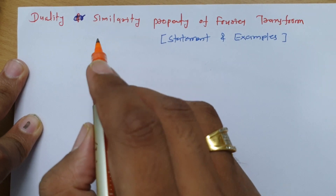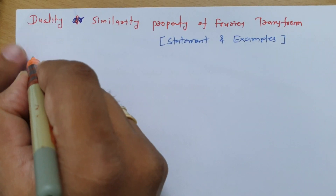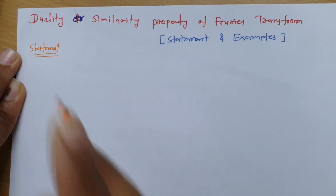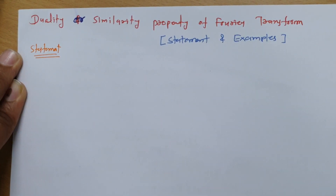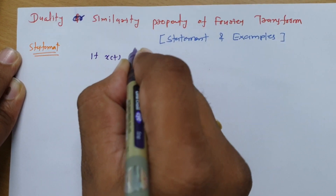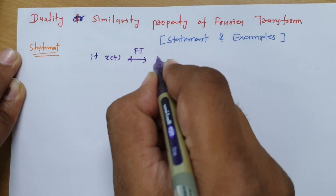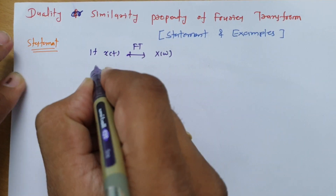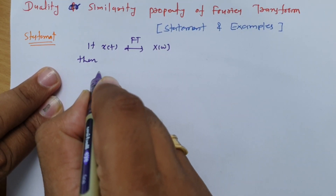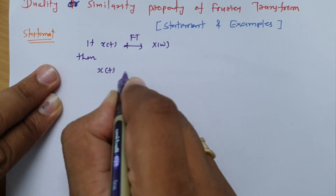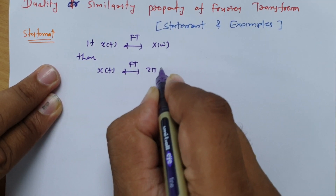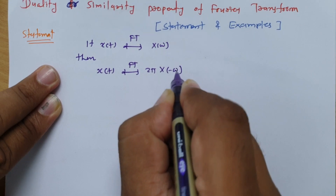The statement is very easy but we need to solve examples so it will be clear how to use this property. The statement says: if you have any signal x(t) and a Fourier transform of that is X(Ω), then as per the duality property we can say the Fourier transform of X(t) is 2π times X(−Ω).